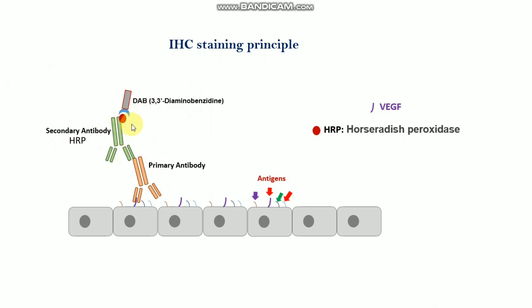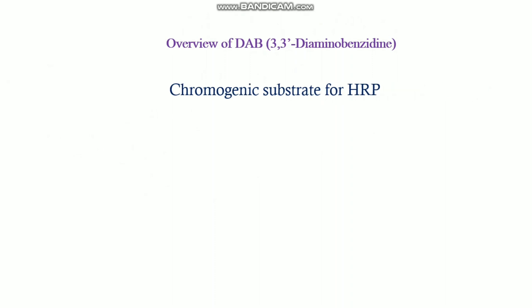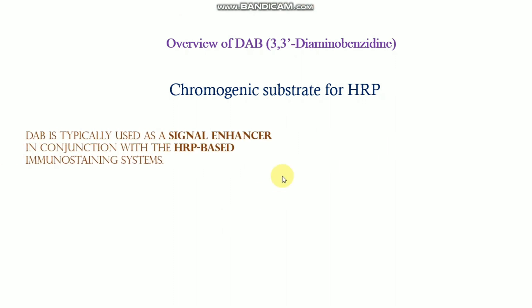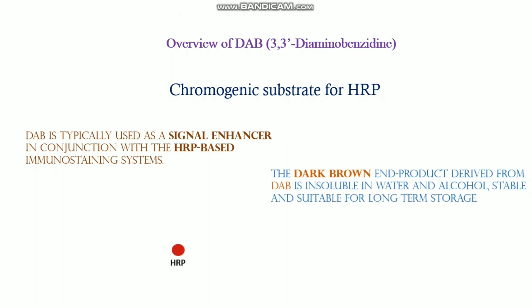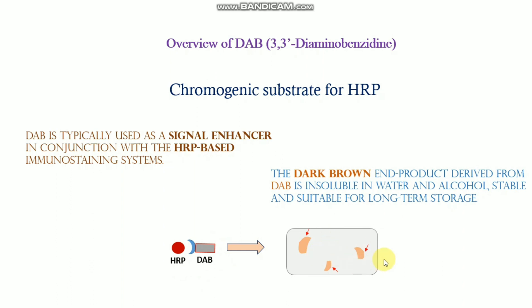When DAB binds with the HRP enzyme, it produces a brown color. DAB is the chromogenic substrate for HRP, and it is used as a signal enhancer in conjunction with HRP-based immunostaining systems. As you can see in this picture, when the DAB substrate binds with the enzyme, a dark brown color forms, which is the detection signal indicating the presence of a specific protein marker.